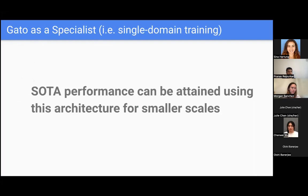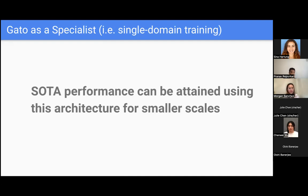Moving on to Gato as a specialist, which was another part of the analysis. The goal of the agent is that it's a general purpose agent that can do well on a variety of tasks, kind of like humans. But they also tested it as a specialist — seeing how it performs in a single domain when trained on a single domain. They found that it attained state-of-the-art performance using the generalist architecture, first on smaller scales.